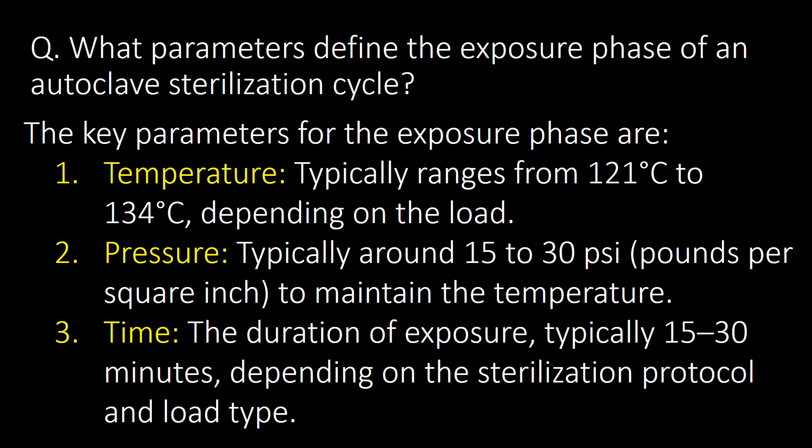What parameters define the exposure phase of an autoclave sterilization cycle? There are three parameters. First is temperature, which typically ranges from 121°C to 134°C. Second is pressure, typically around 15 to 30 psi. Third is time — the duration of exposure, typically 15 to 30 minutes depending on the sterilization protocol and load type.